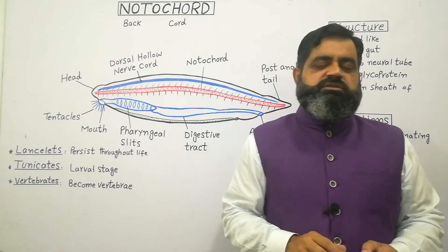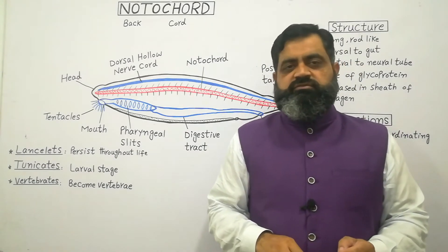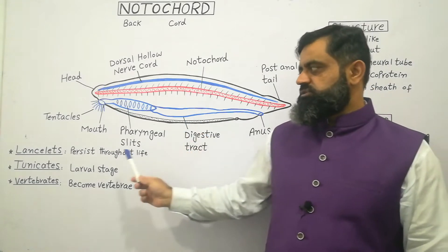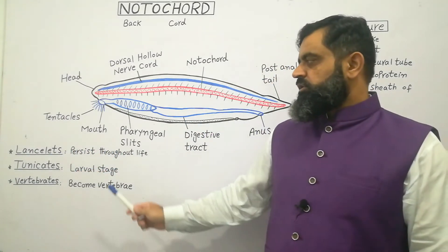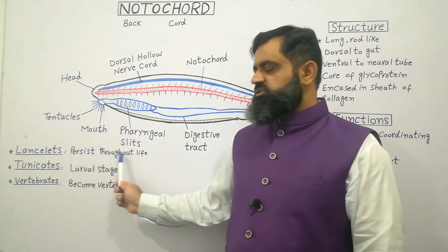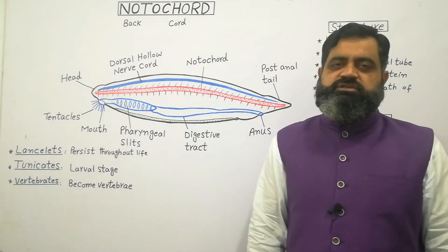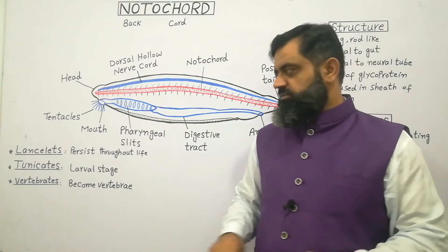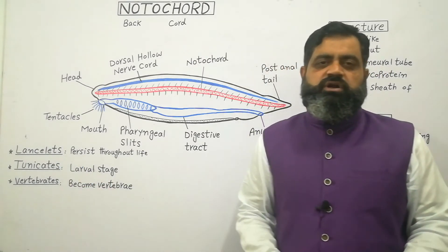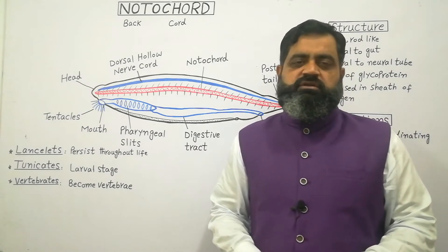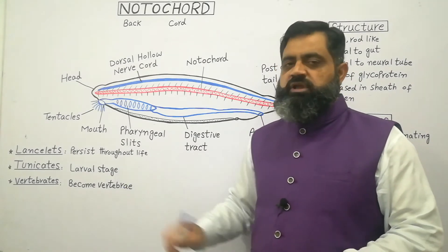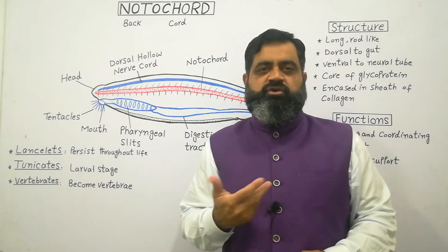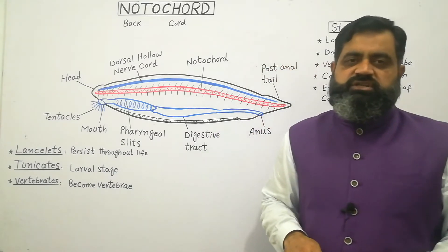In some animals, this structure persists throughout their life. For example, in cephalochordates, the example is amphioxus, also known as lancelets. They contain notochord which persists throughout their life. While in tunicates, notochord is present only in the larval or embryonic stage — when they are in larva form they have notochord, but later on it disappears.